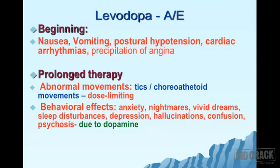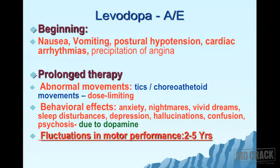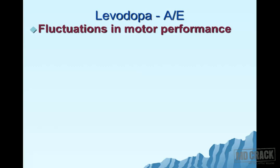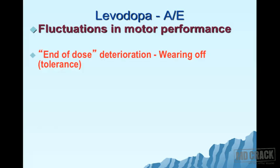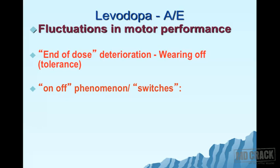On prolonged therapy of two to five years, patients develop fluctuations in motor performance. There are two forms: first, end-of-dose deterioration — a wearing-off phenomenon — due to gradual development of tolerance to levodopa on long-term use. Second is the on-off phenomenon, also called switches.